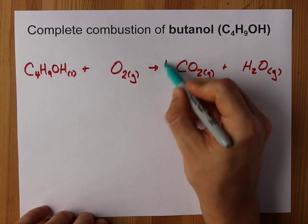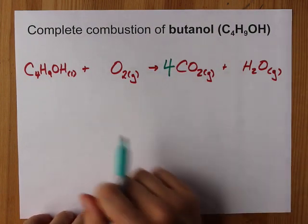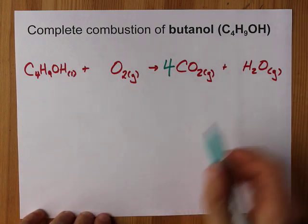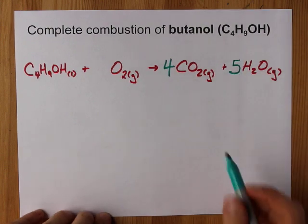Four carbons on the left, four carbons on the right, ten hydrogens on the left, 9 and 1 makes 10. So how many pairs is that? That's five pairs.